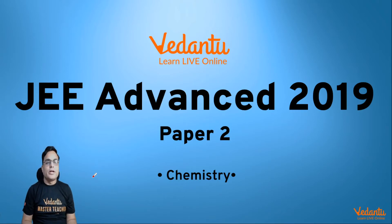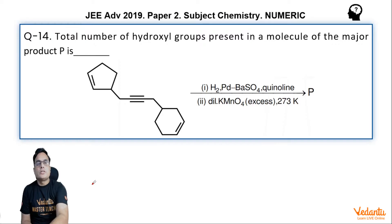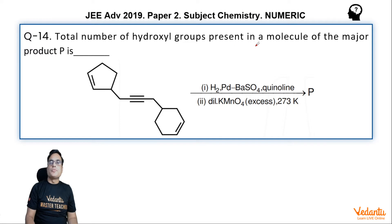Hello guys, I am Vinay Pandey, master teacher at Vedantu, and let us solve question number 14 of JEE Advanced 2019 Paper 2 Chemistry. This question says that total number of hydroxyl groups present in the molecule of the major product P is a numeric question. The starting compound is treated with Lindlar catalyst and then followed by Baeyer's reagent.